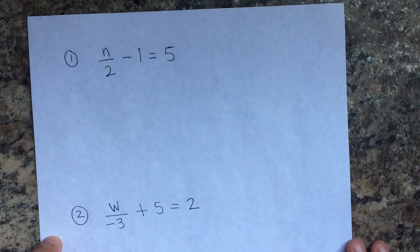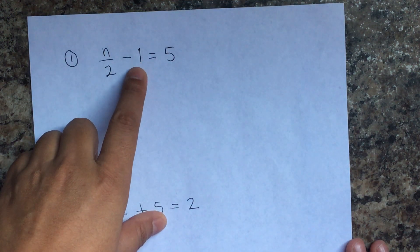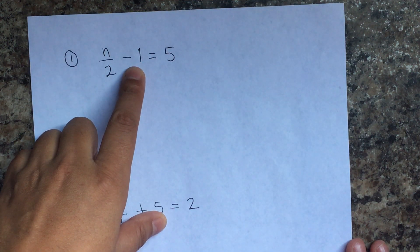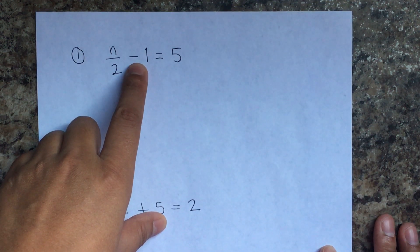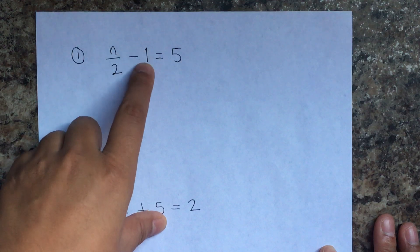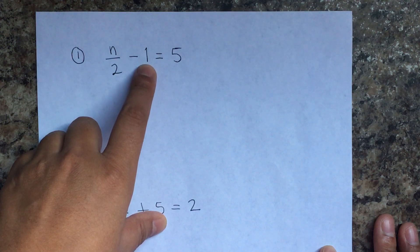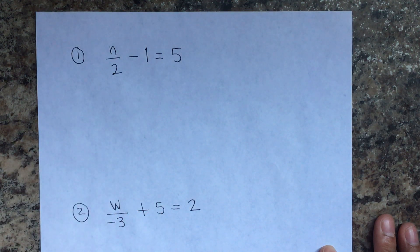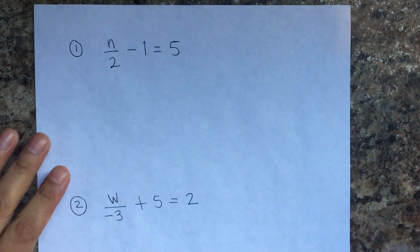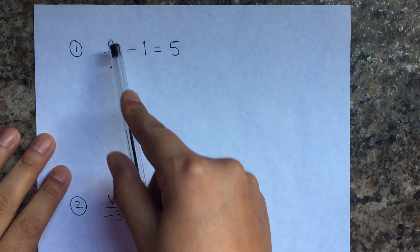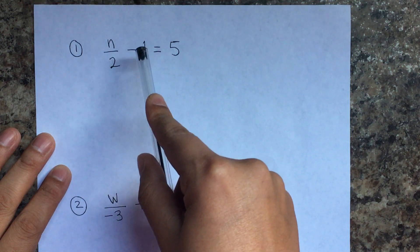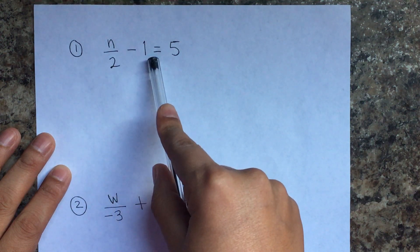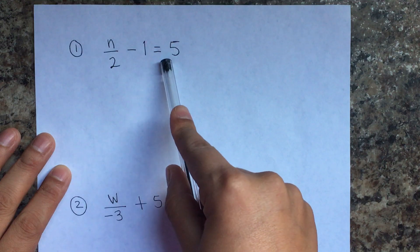So if you recall from previous lessons, I told you that we always — actually not always, and I said that in the last video — get rid of the minus and plus first, but there was going to be an exception. Today that's what we're going to be learning. In this example we have a number divided by 2, subtracting 1, and that equals 5.